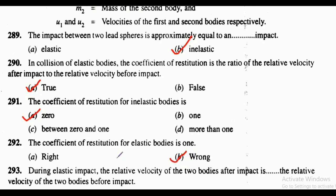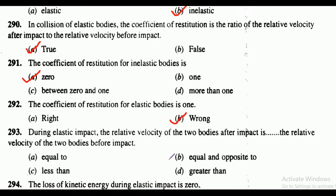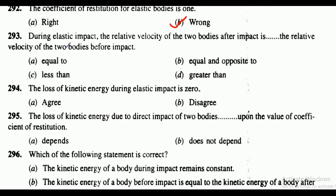Question 292: the coefficient of restitution for elastic bodies is one — right or wrong? The answer is option B, it is wrong. Question 293: during elastic impact, the relative velocity of the two bodies after impact is — the correct answer is option B, that is equal and opposite to the relative velocity of the two bodies before impact.